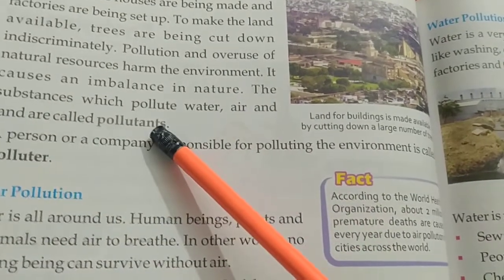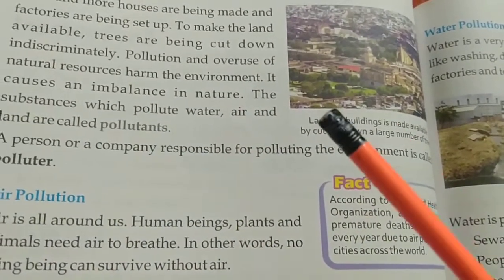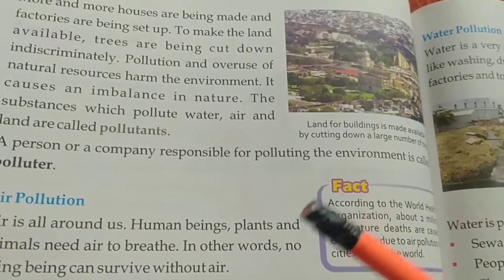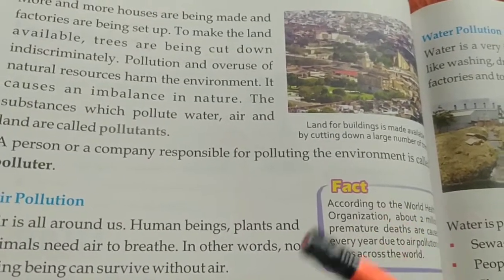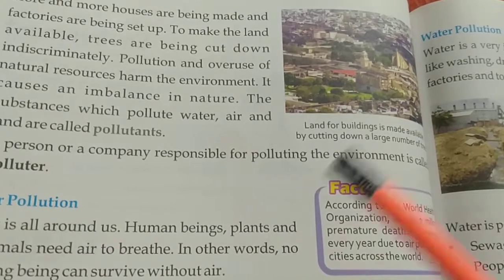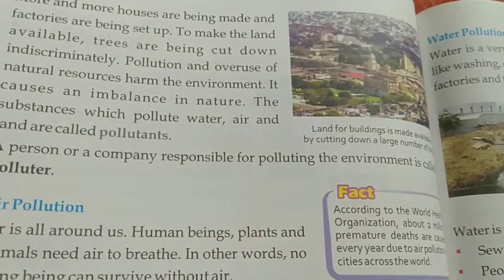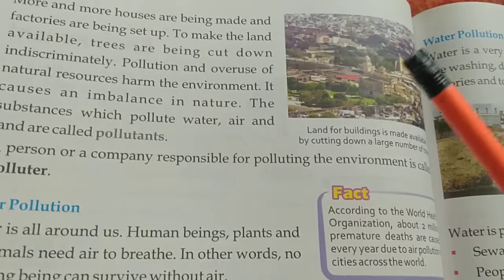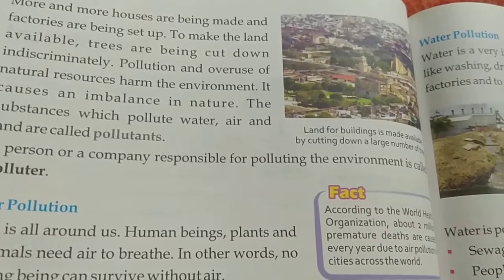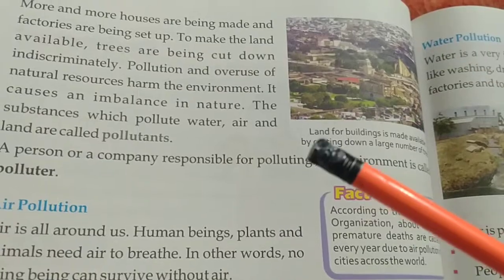The impurities or substances that cause pollution are called pollutants. For example, if we are cracking crackers, they cause smoke or harmful gases emitted into the air — so they are pollutants. Chemicals that factories release into water bodies — that chemical is creating pollution, so that chemical is a pollutant.